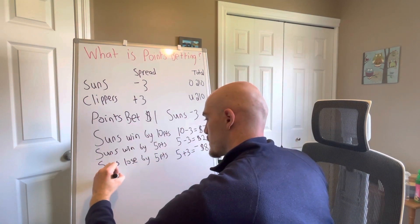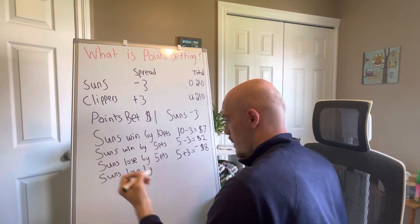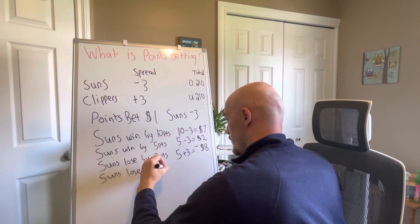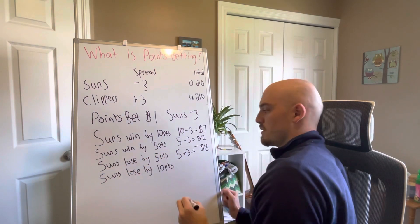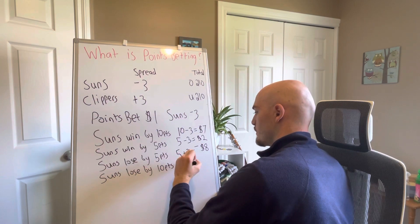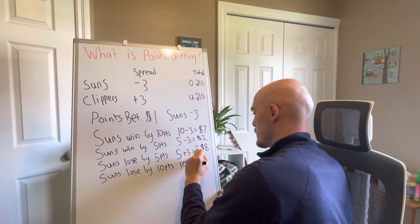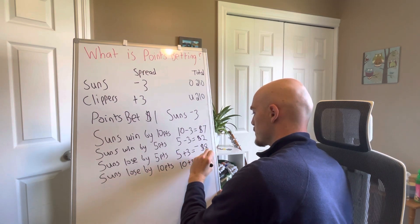One more example here. If the Suns lose in a blowout, they lose by 10 points, then there's the 10 points they lost by, plus the three you needed them to cover the spread by. So in this scenario, you lose $13.